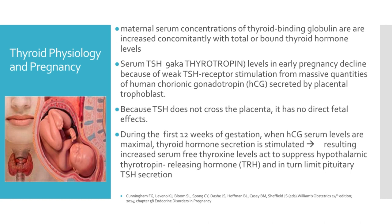Maternal thyroid changes are substantial, and normally altered gland structure and function are sometimes confused with thyroid abnormalities. First, maternal serum concentrations of thyroid-binding globulin are increased concomitantly with total or bound thyroid hormone levels. Secondly, thyrotropin, also called thyroid-stimulating hormone, currently plays a central role in screening and diagnosis of many thyroid disorders. Serum TSH levels in early pregnancy decline because of weak TSH receptor stimulation from massive quantities of human chorionic gonadotropin or HCG secreted by the placental trophoblast. Because TSH does not cross the placenta, it has no direct fetal effects.